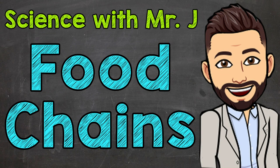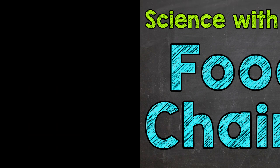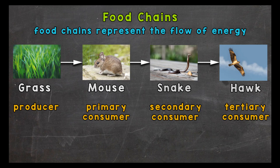Welcome to Science with Mr. J. In this video I'm going to be covering food chains, and food chains represent the flow of energy between living things. Let's start with where all this energy starts, and this is very important. All of the energy in a food chain starts with the Sun. Now typically the Sun is not shown within a food chain, but it's very important to know that this is where all of the energy in a food chain comes from.